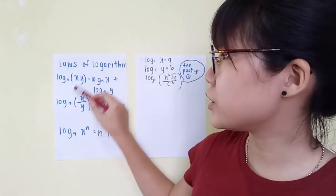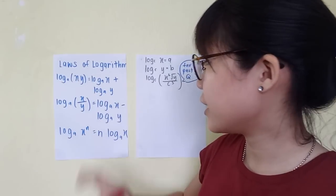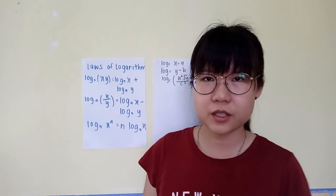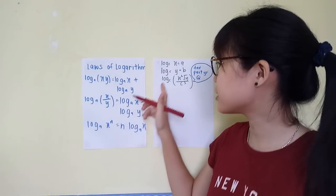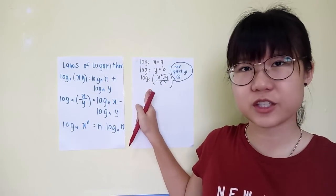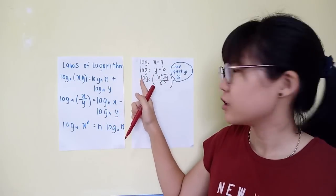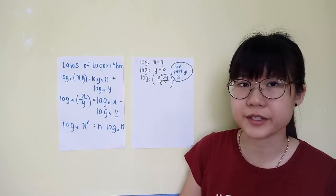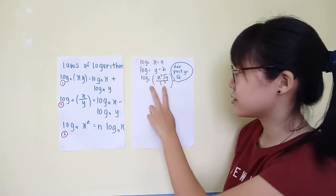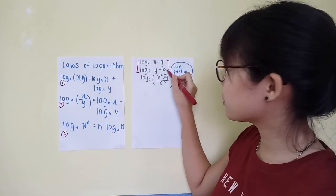We will now proceed with the laws of logarithm. There are three laws. The first is log A of XY equals log A of X plus log A of Y. Because it's very difficult to explain using all these unknowns, I'll be explaining using a question. This question is actually a favorite SPM question — most of the past years are asked in the style of this. This question is solved by applying these three laws of logarithms. The question is to express this in terms of A and B, and they gave you two substitutions to use.